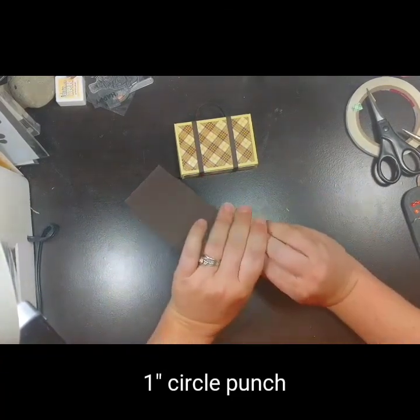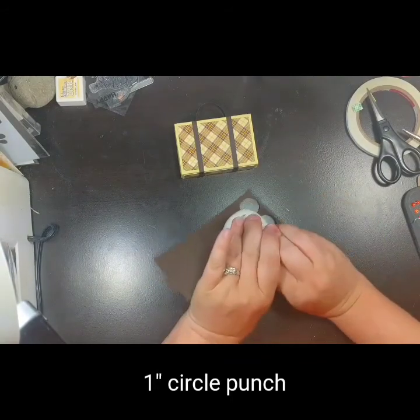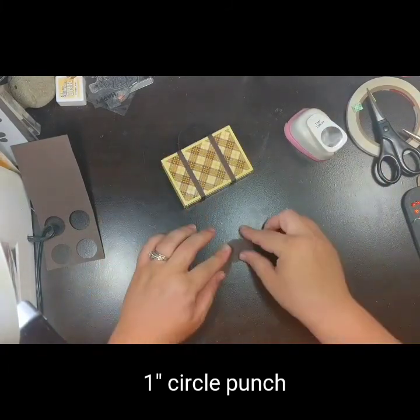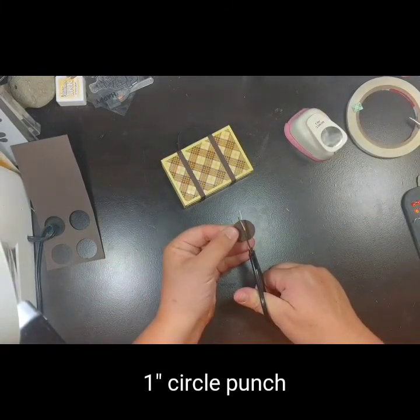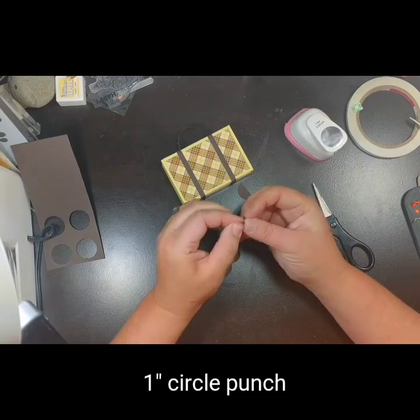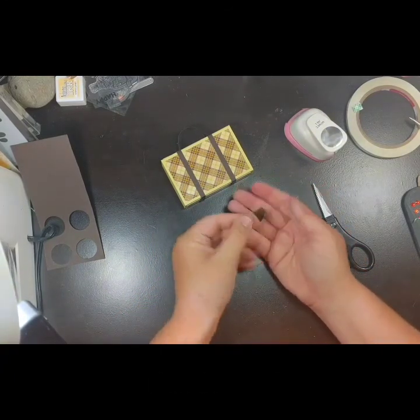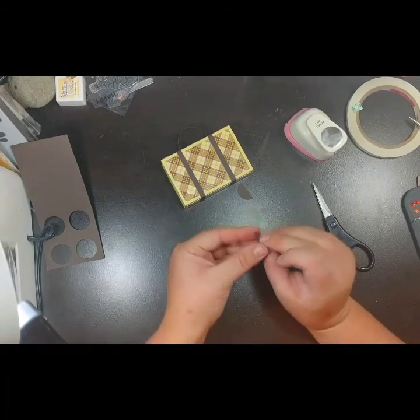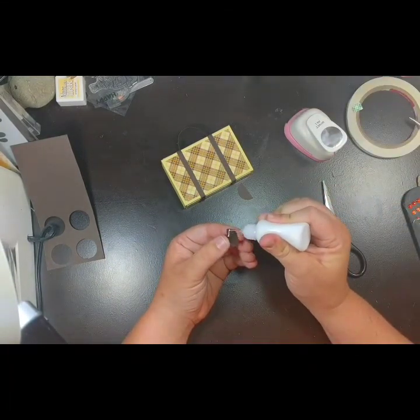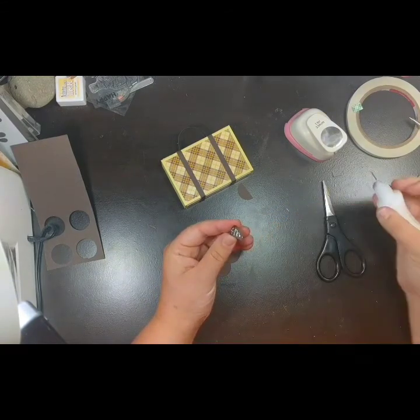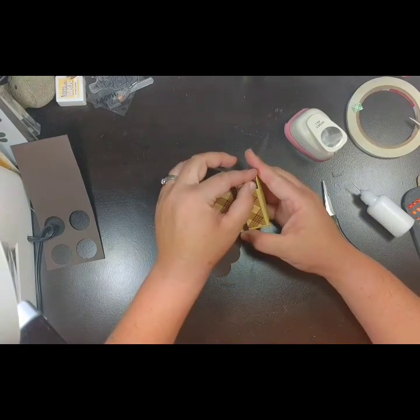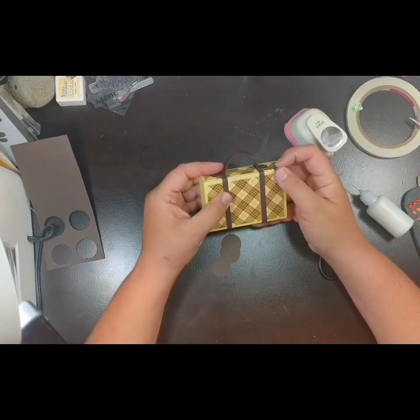Next I'm using a one-inch circle punch, you could also use a die, to cut four circle shapes. Then I'll be using my scissors to cut them in half. Fold each half in half and glue it onto the corners of the suitcase.